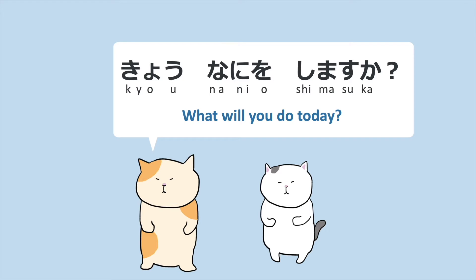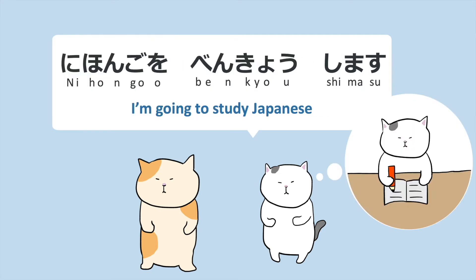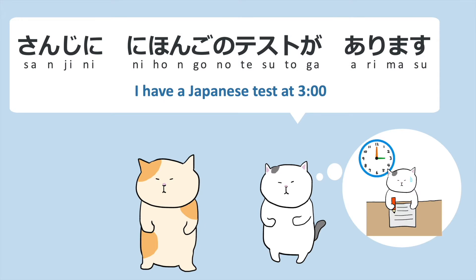What will you do today? 今日何をしますか？ I'm going to study Japanese. 日本語を勉強します。 I have a Japanese test at 3. 三時に日本語のテストがあります。